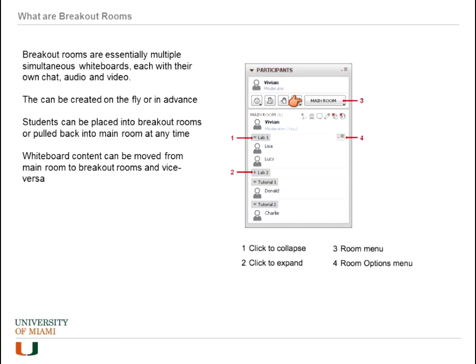Once you create a breakout room, a new button shows up in the participants' window panel — this is the room menu. From there you can do several functions that apply to all the rooms. And then there's the room options menu where you can set some options that only affect one room at a time.